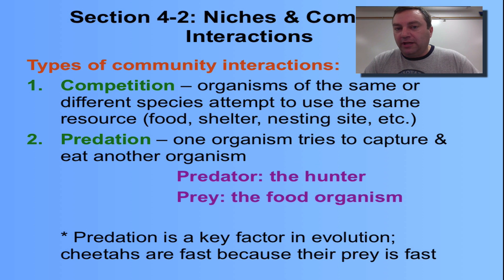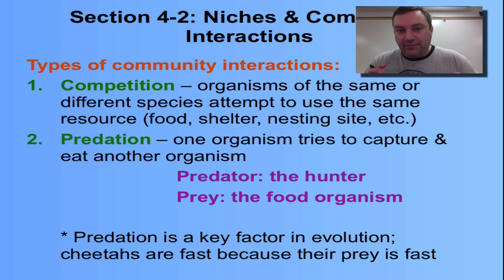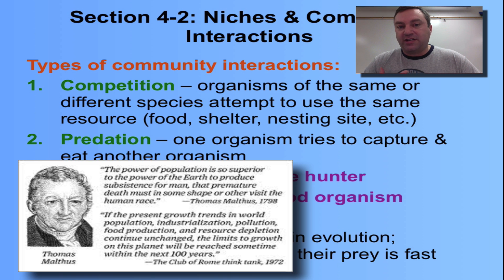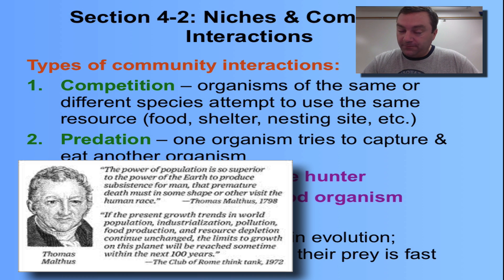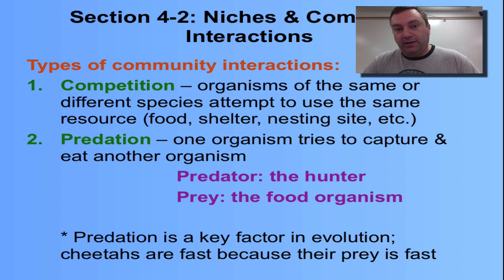There are limited resources, including food, shelter, nesting sites, mates, etc., and this leads to competition. This competition for limited resources is the cornerstone of Thomas Malthus' philosophy on how human populations can be kept in check through disease, famine, and war. Malthus' concept greatly influenced Charles Darwin on his survival of the fittest and natural selection concepts.